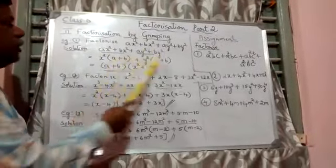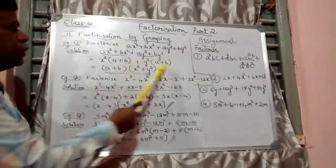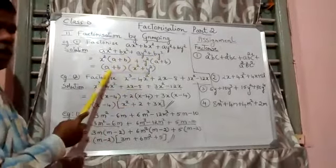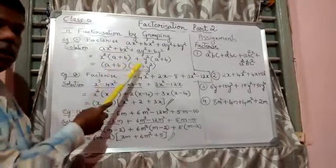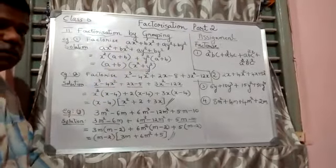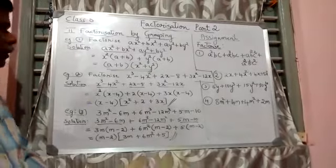In both these terms, a plus b is common. So take a plus b out. What remains is x² plus y². This is the factorization of the first example.